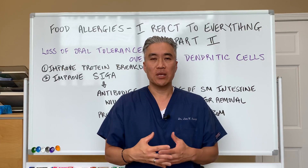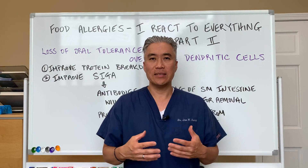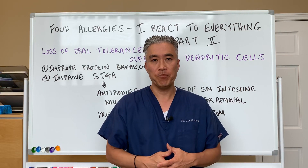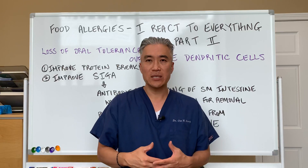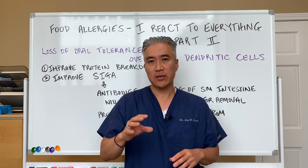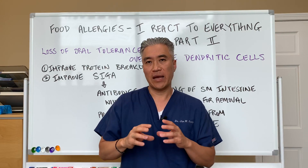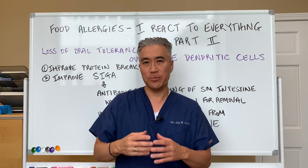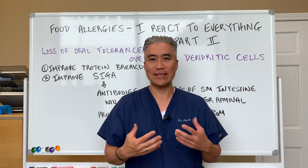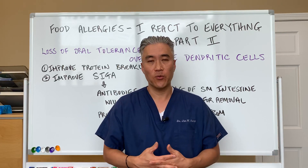On the last video, we talked about the loss of oral tolerance — the inability to eat a variety of different foods because you have reactions to them. We explained some of the mechanisms of how dendritic cells in the stomach or the small intestine will sample proteins and have an adverse immune response, leading to reactions like itchy skin, bloating, brain fog, and digestive issues.